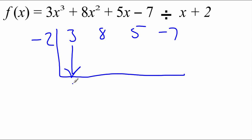Carry down the 3. 3 times negative 2 is negative 6. Add these up, we get 2. 2 times negative 2 is negative 4. Add these up, we get 1. 1 times negative 2 is negative 2. Add these up, we get negative 9. So again,